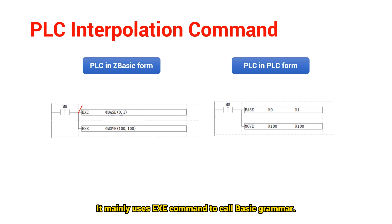It mainly uses exe commands to call basic grammar. So, here the command of same basic grammar should be written. Then, base means axis selection. So, x0 and x1 is selected. Then, they do a linear interpolation together. The distance both are 100.